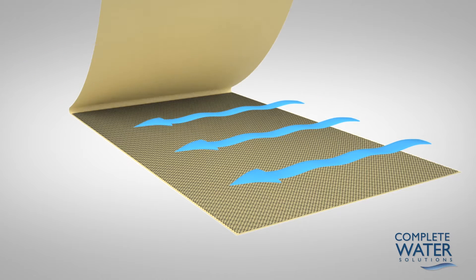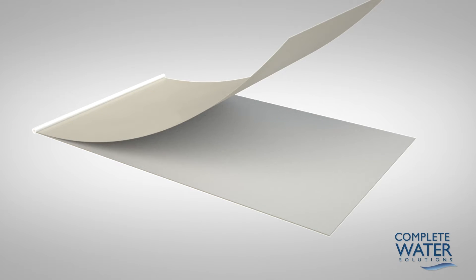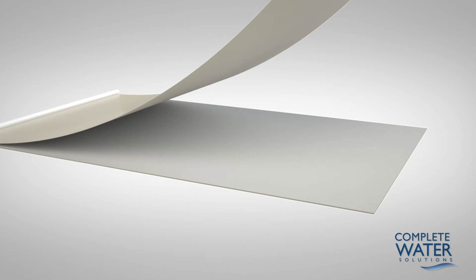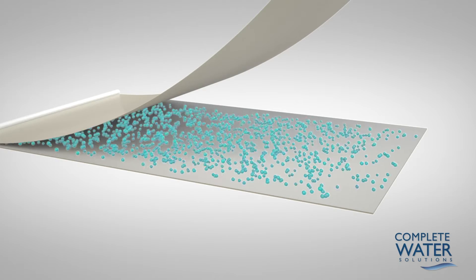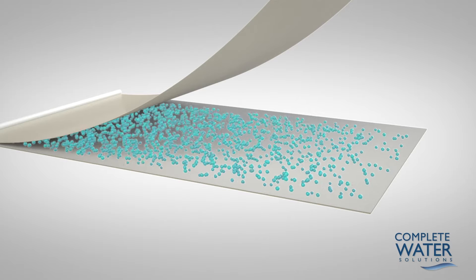This provides turbulence and creates space between the membrane sheets for the feed water. A sheet of permeate spacer is added to the membrane sheets and feed channel spacer. This enables the water product or permeate to flow evenly across the entire membrane surface even under high pressure.